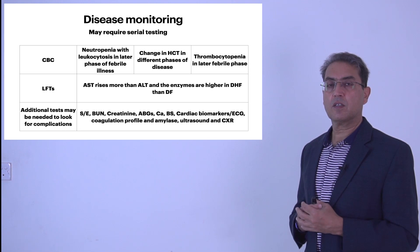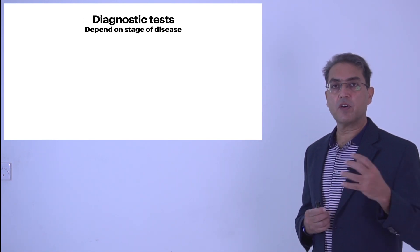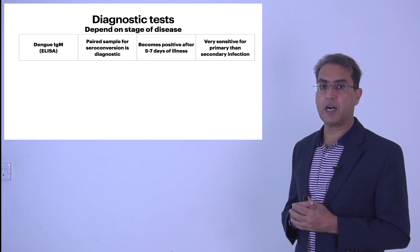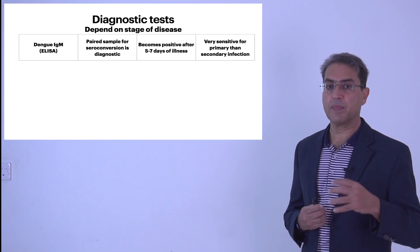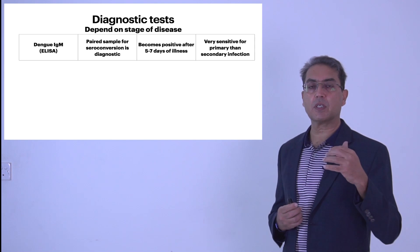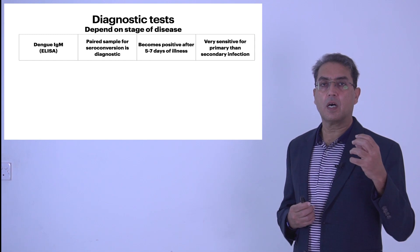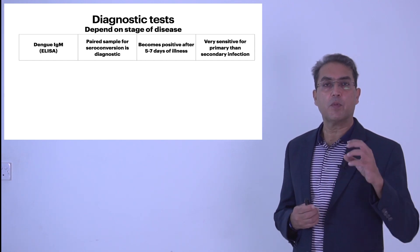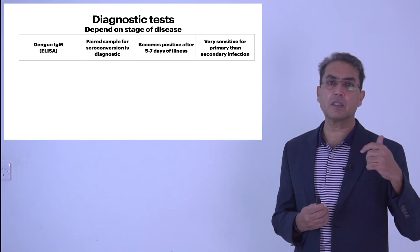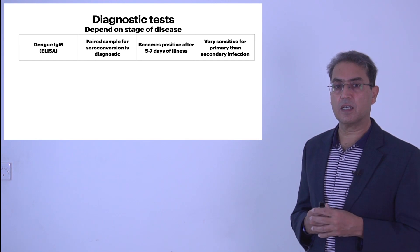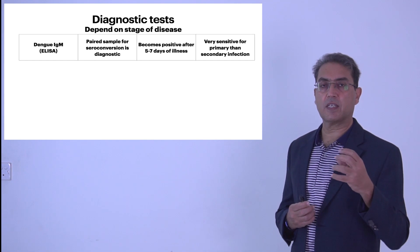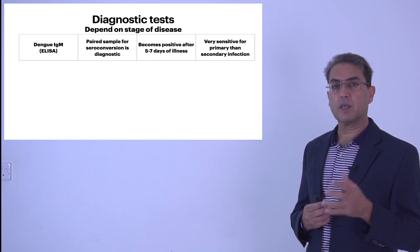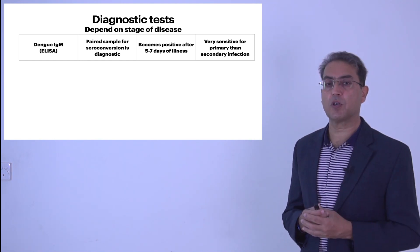Diagnostic tests to confirm dengue depend upon the stage of the disease. For dengue IgM antibodies, detected by ELISA, a paired sample — one early and one later — is most useful as a rising titer is more confirmatory than an isolated test. In an epidemic setting, a single test may be strongly suggestive. IgM becomes positive after five to seven days of illness, is very sensitive for primary infection, but may be less useful for secondary or repeat infections.